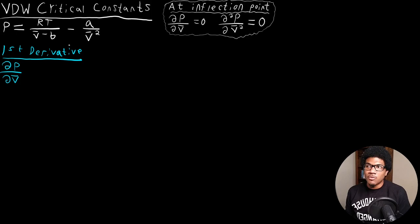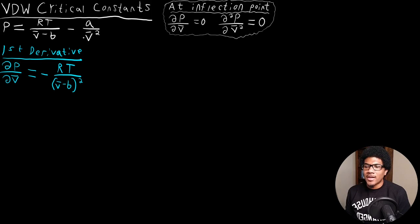To take this derivative, we differentiate each term using the power rule. The first term gives us negative RT over (v bar minus b) squared. The second term brings a negative 2 out front, but since it's already negative, it turns into a positive: plus 2a over v bar cubed.